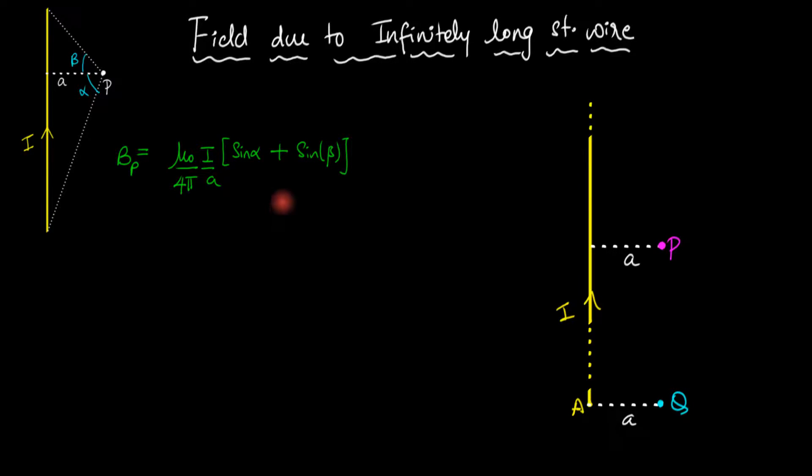This is the continuation of the last episode. In the previous episode we derived this result: the magnetic field due to a wire which has a finite length, and the angle subtended by the two extreme lines are alpha and beta.